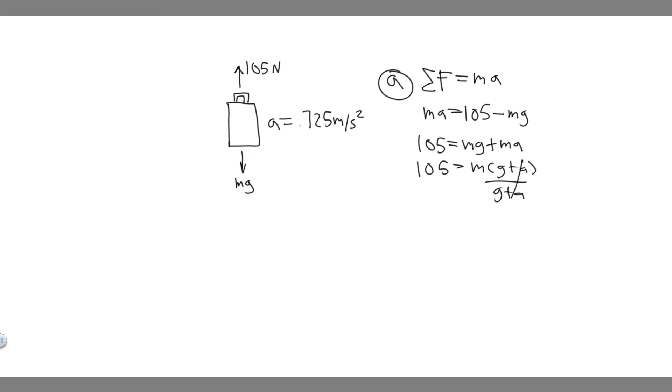Dividing by g plus a, you're going to get what m equals. So you're just going to get m equals 105, and then you divide by the gravity, and g is just 9.81, and then the acceleration of the system is 0.725. So plus 0.725.